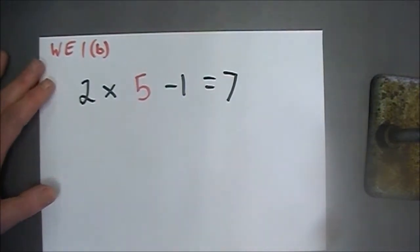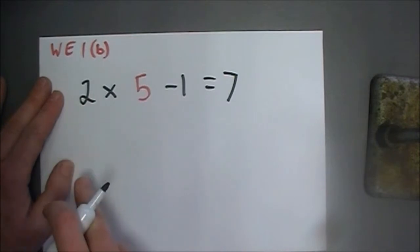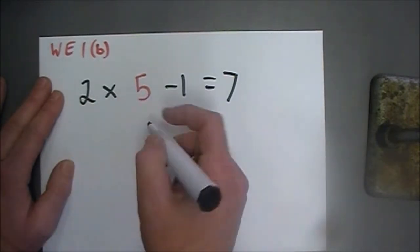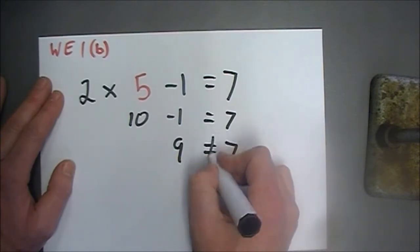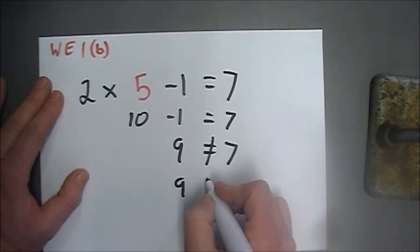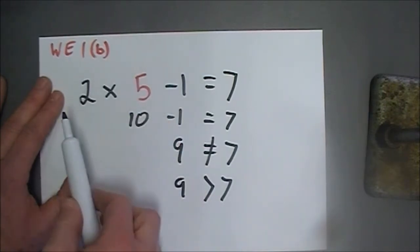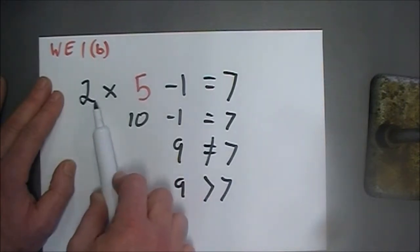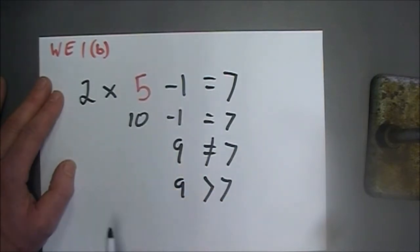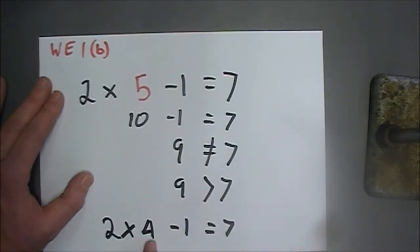Part B: 2 times 5 minus 1 equals 7. Remember our order of operations. 2 times 5 is 10, and 10 minus 1 equals 9 — which clearly does not equal 7. Since 9 is greater than 7 and is bigger by 2, we need a different number. Because this number must decrease, we try 2 times 4 minus 1: 2 times 4 is 8, minus 1 is 7. There's our final answer.